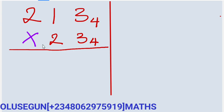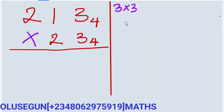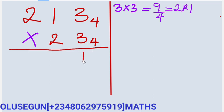The first thing: 3 times 3. 3 times 3 is equal to 9. But remember that we are in base 4, so we divide by 4. It goes in 2, remainder 1. What remains is what we are going to write, so it remains 1. It goes in 2 times, remainder 1.